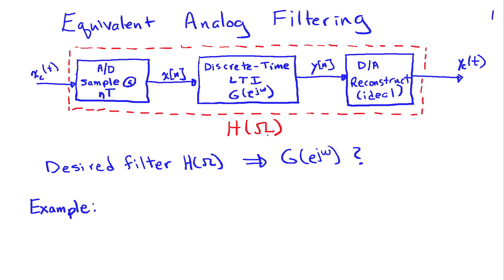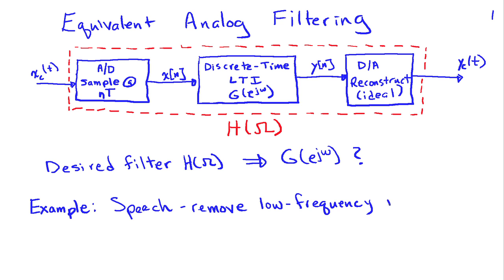Suppose I have some desired filter action H(Ω) — maybe a band-pass or high-pass filter. The question is: how do I translate my specifications on H(Ω) to specifications on the discrete-time filter G(e^jω), which sits between the analog-to-digital conversion and the digital-to-analog conversion?